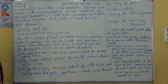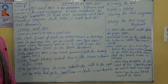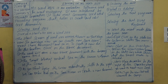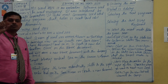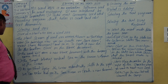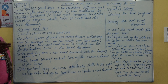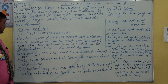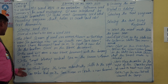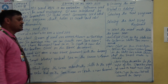The small blinking vertical line on the screen is known as the cursor. The cursor indicates where the text will be typed. As you start typing, the cursor automatically shifts to the right.